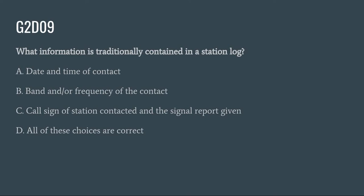G2D09: What information is traditionally contained in a station log? A. Date and time of contact. B. Band and/or frequency of the contact. C. Call sign of station contacted and the signal report given. Or D. All of these choices are correct. The correct answer is D: all of these choices are correct.